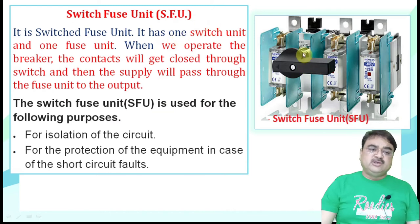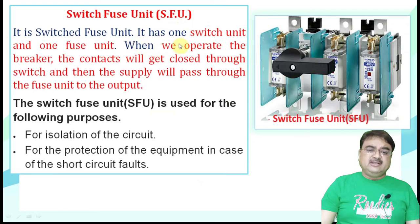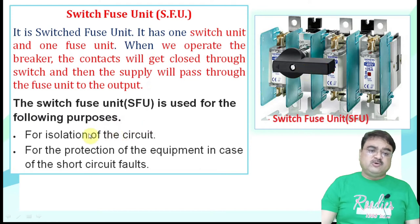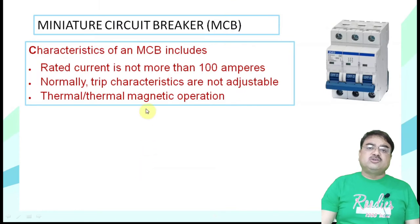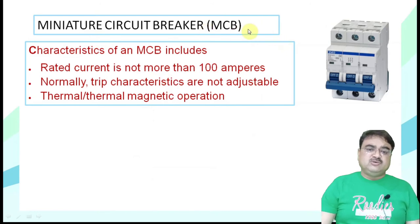The first is the switch fuse unit. The name describes it: it is made of two units — the first is a switch and the second is a fuse. When we operate the breaker, the contact closes through the switch, and the supply passes through the fuse unit. The switch fuse unit is used for isolation of the circuit and for protection of equipment in case of short circuit fault.